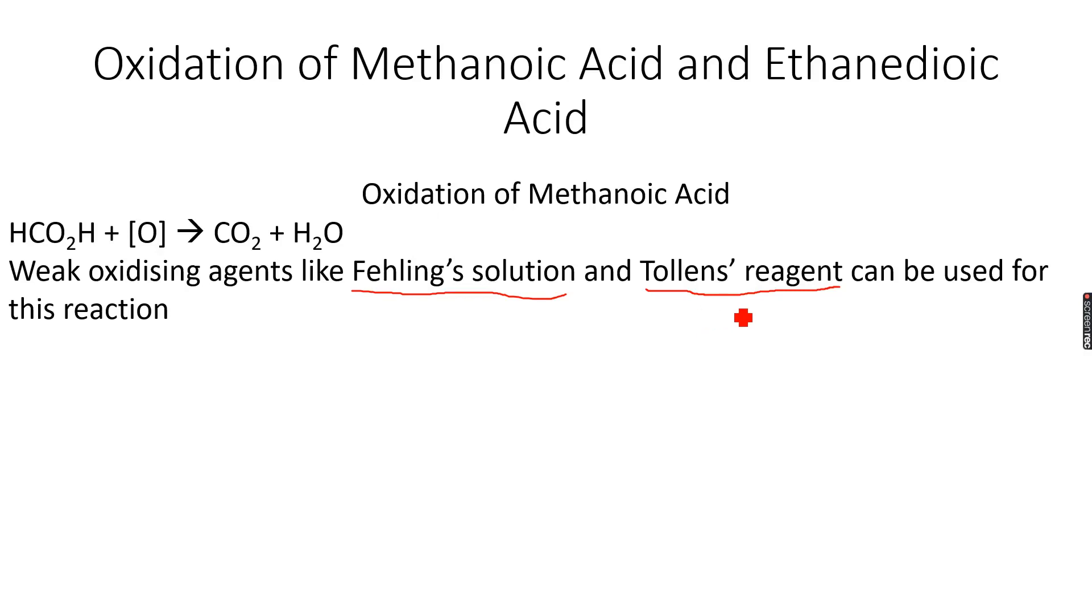Tollens reagent gives a silver mirror with aldehydes as an observation, and it gives no reaction with ketones. So both these reagents are used to distinguish between aldehydes and ketones when we have a sample of each but don't know which one is which, which one is an aldehyde or which one is a ketone. So we can use either of these two and we can correctly identify which one is which.